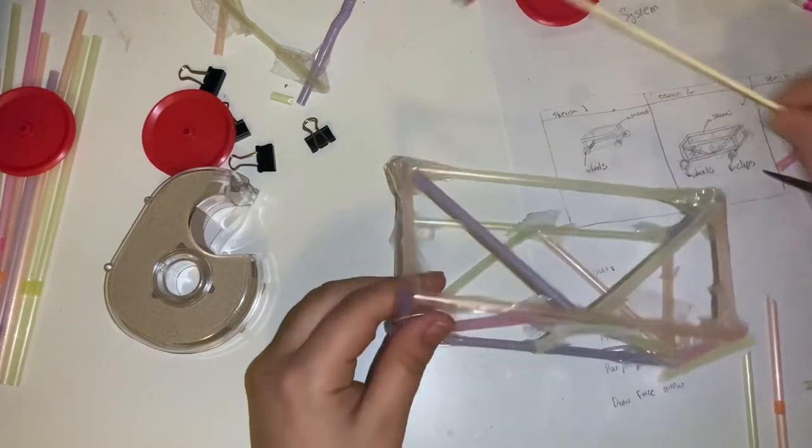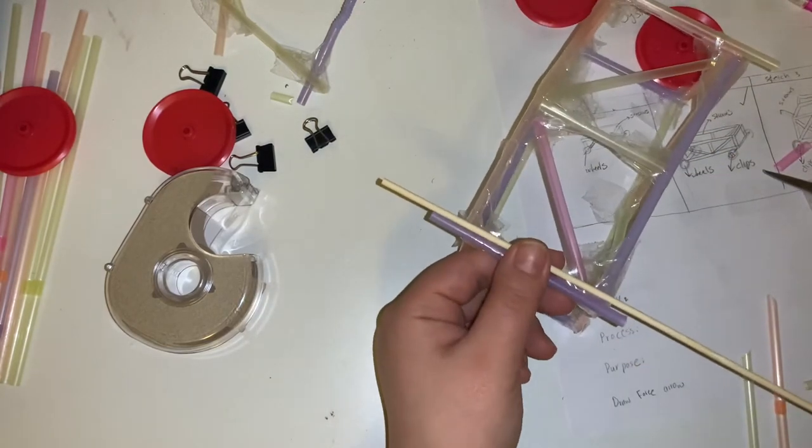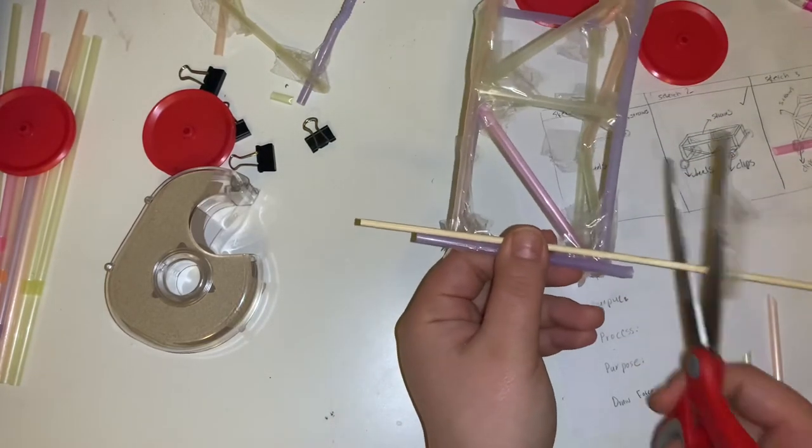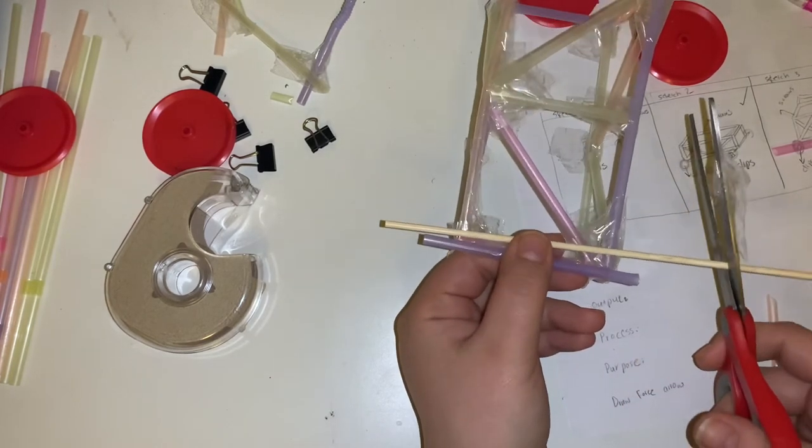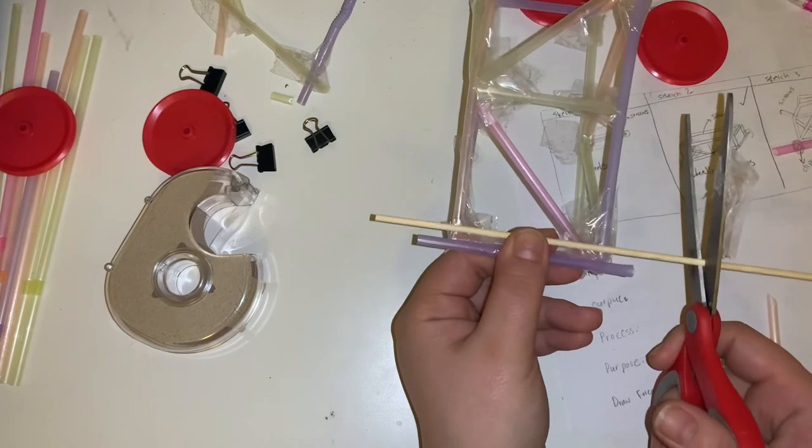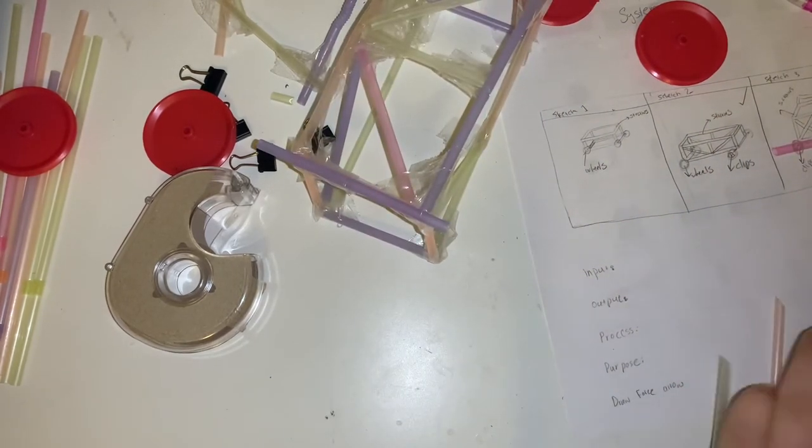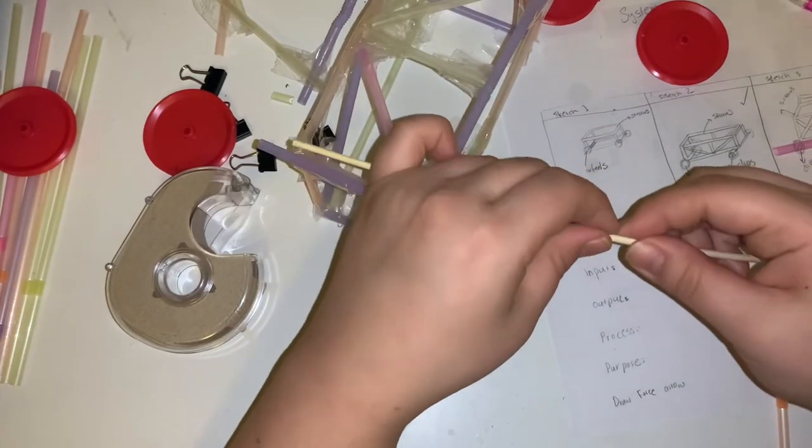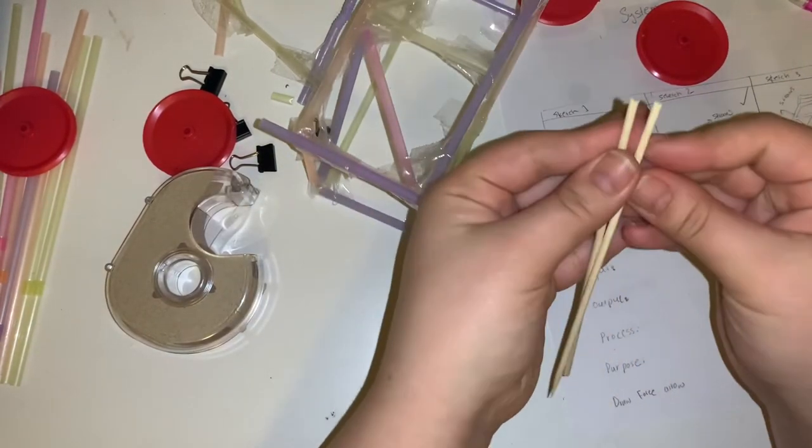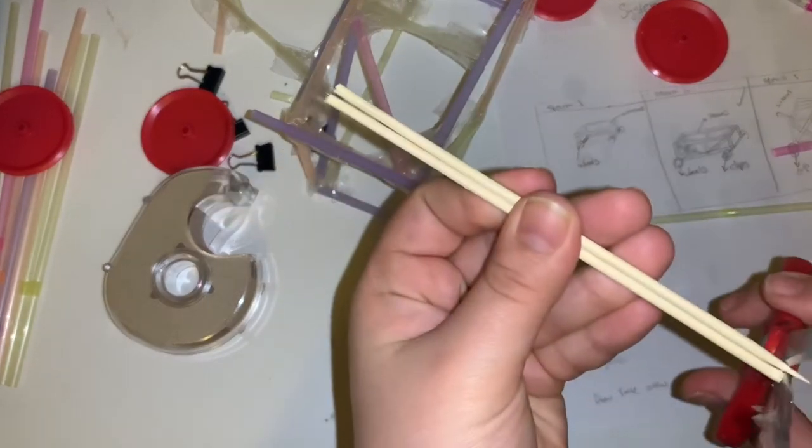Then what happens is you can cut your dowels, again larger than those, by like I'm going to make them this much larger. It's easier to mark and then break. Okay, they're almost the same size so I'm going to use them.